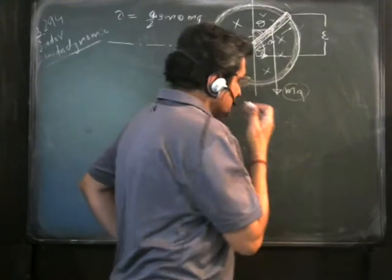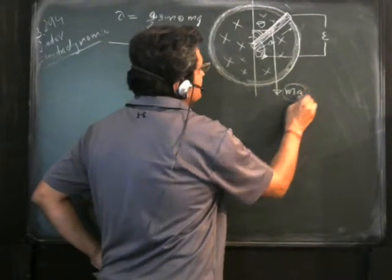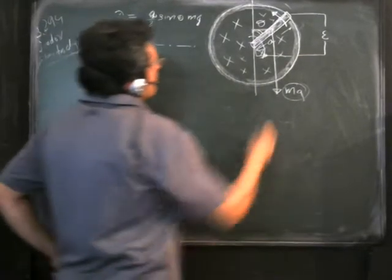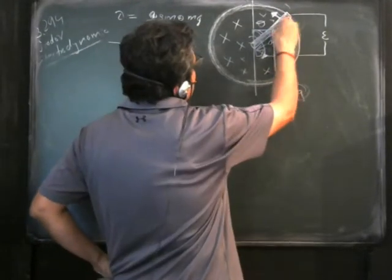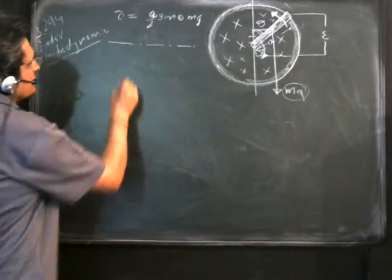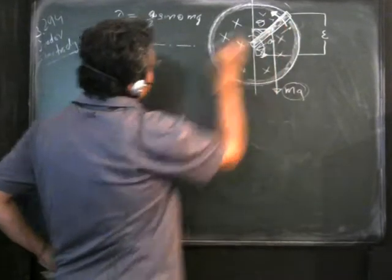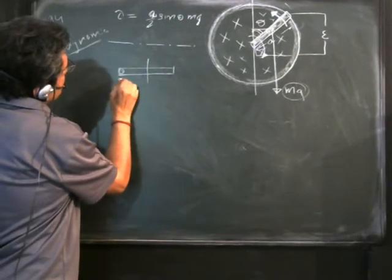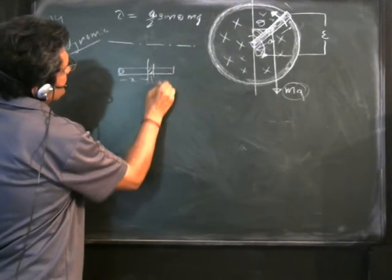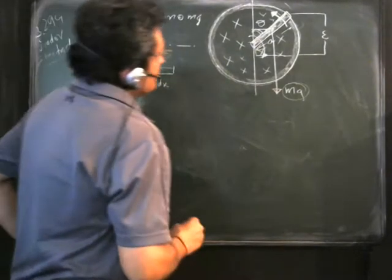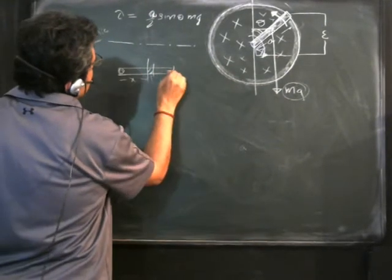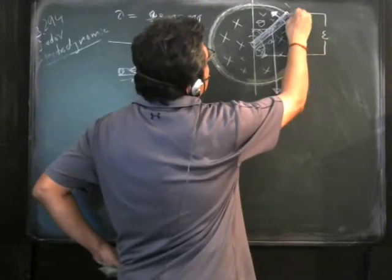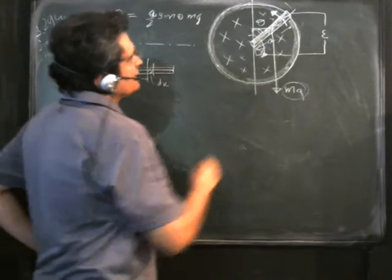We should provide an EMF that is able to counter this torque. Let the rotation due to this EMF be in a certain direction, and let there be a torque on the rod. To find this torque, we first need to know the force acting on the rod at different points. Consider a small element dx at distance x from the center, with current flowing through the rod.